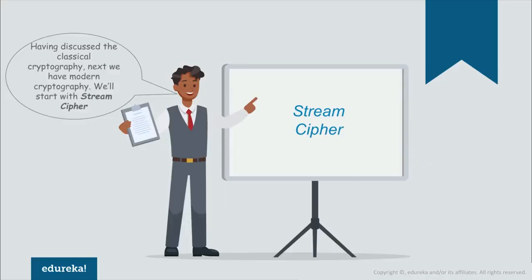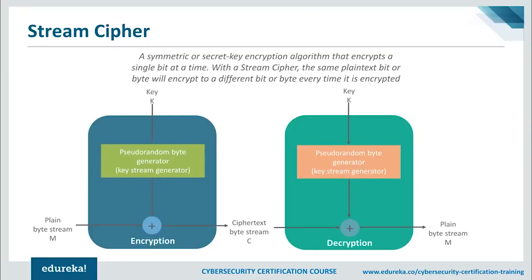A stream cipher is a method of encrypting text to produce ciphertext in which a cryptographic key and algorithm are applied to each binary digit in a data stream one bit at a time. This method is not widely used in modern cryptography. The main alternative is the block cipher, in which a key and algorithm are applied to a block of data rather than individual bits in a stream.